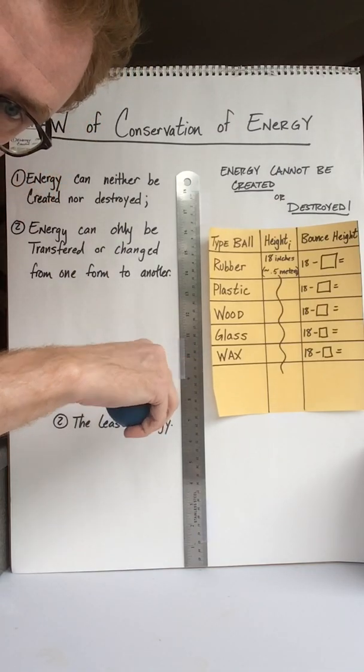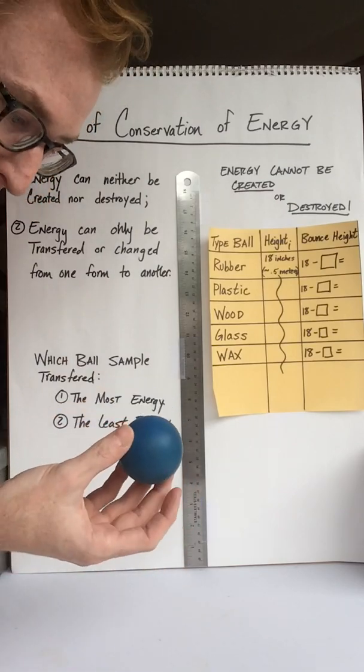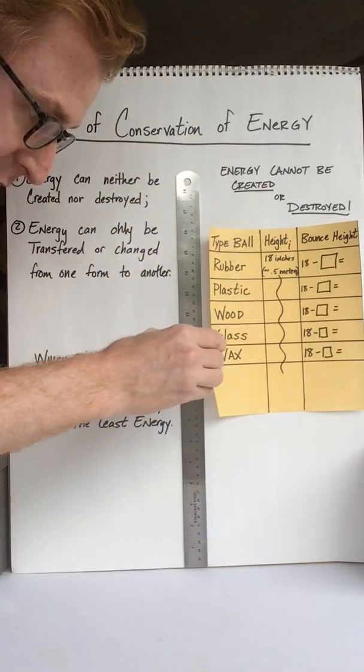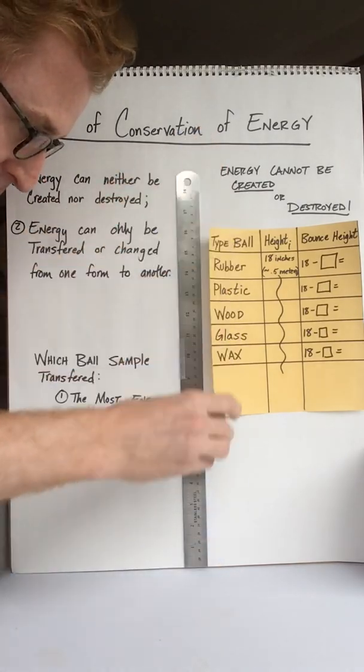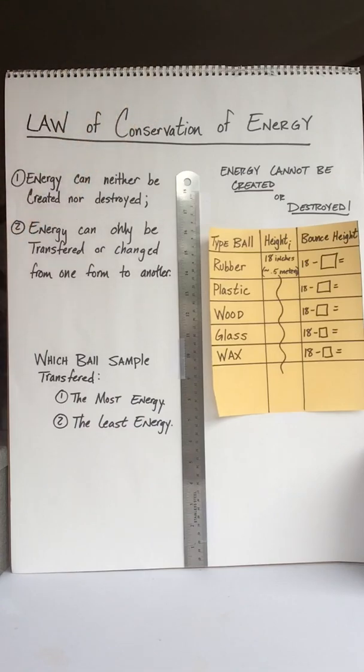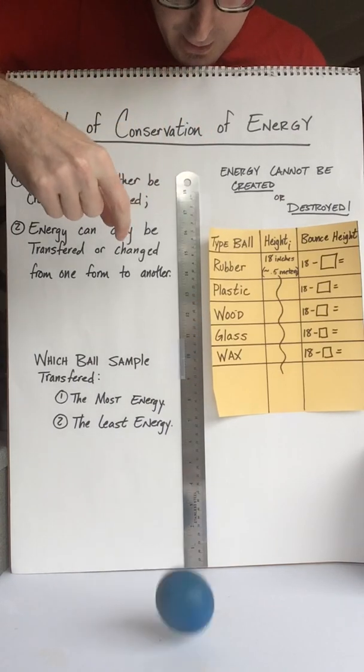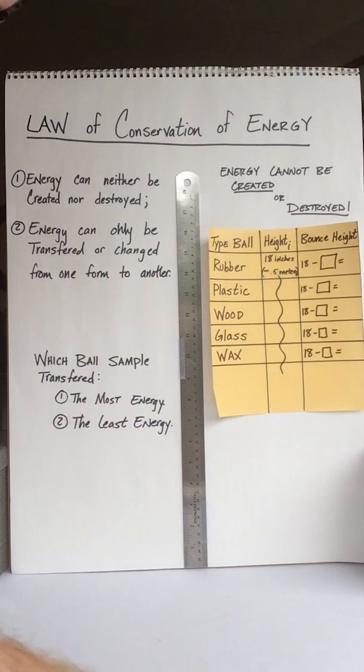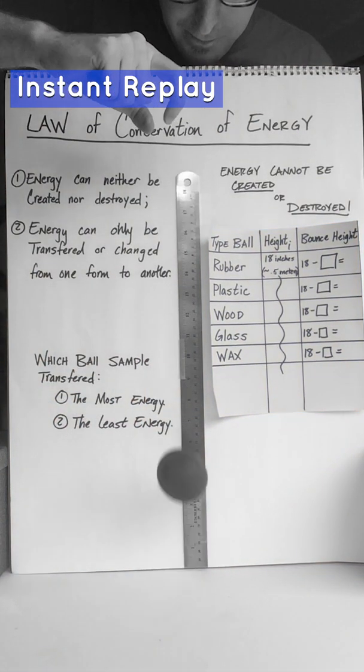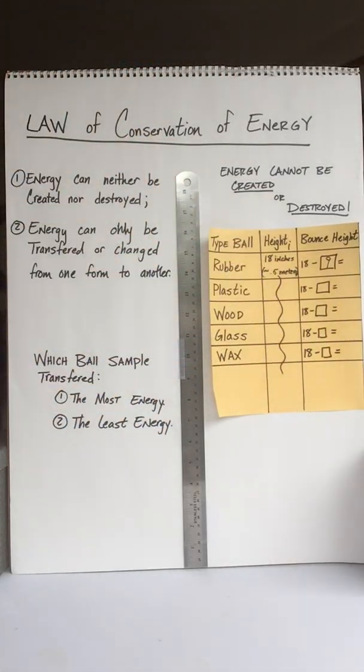In science multiple attempts are best, so if you wanted to do multiple drops and take the average of your drops that would be wonderful. For this video I'm just going to do the one. I'll do it again so we can test. Going up, and from mine I'm going to say it went up to about 9 inches, so I'm going to put nine inches here on my bounce height on my data sheet.